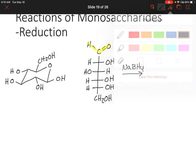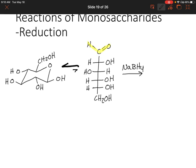The cyclic form is favored. So we're going to react this with sodium borohydride and water, and that's going to turn the aldehyde at the top into just a regular alcohol group. Everything else will stay the same.